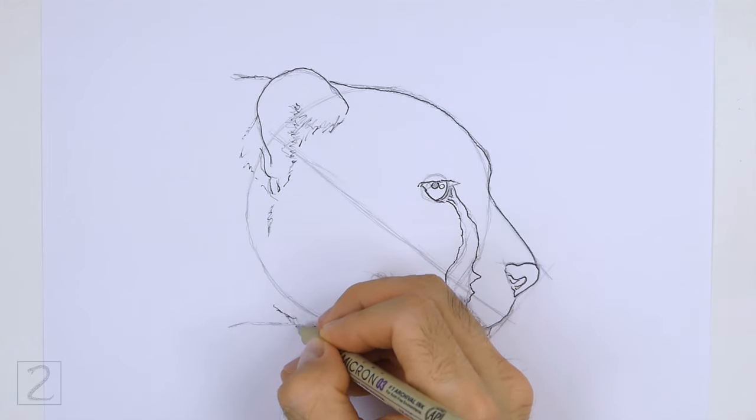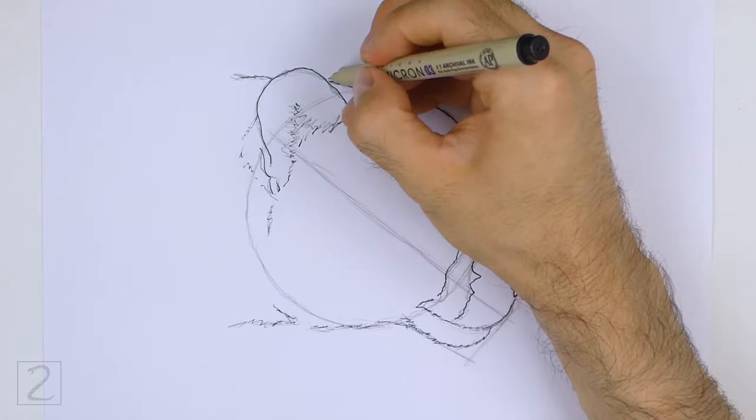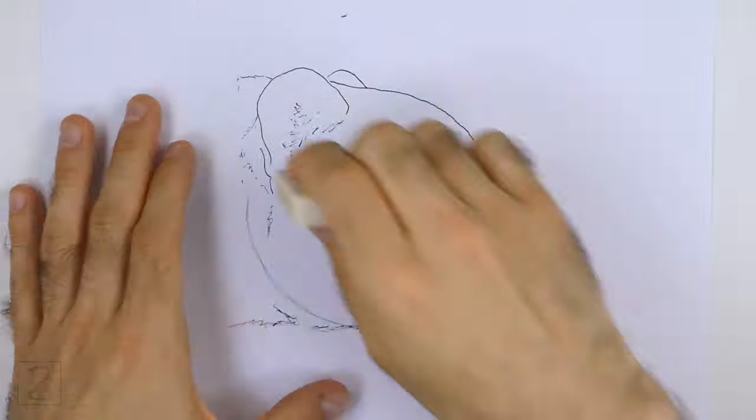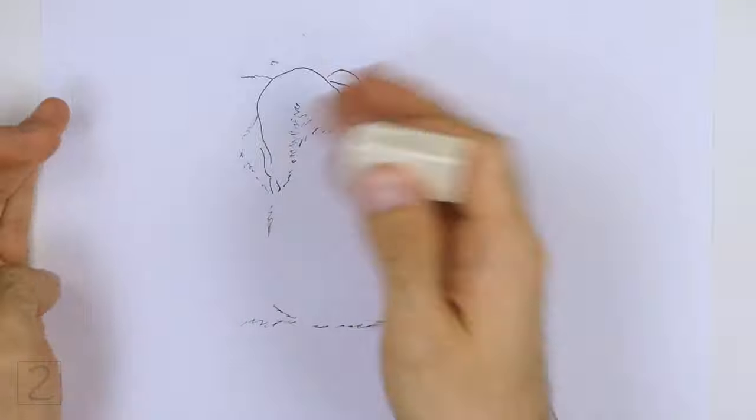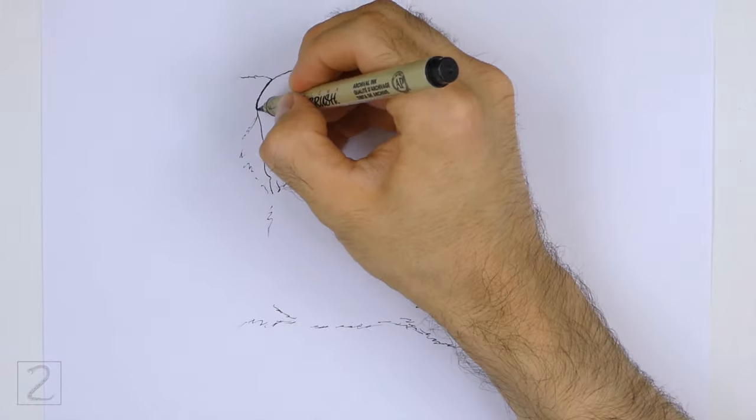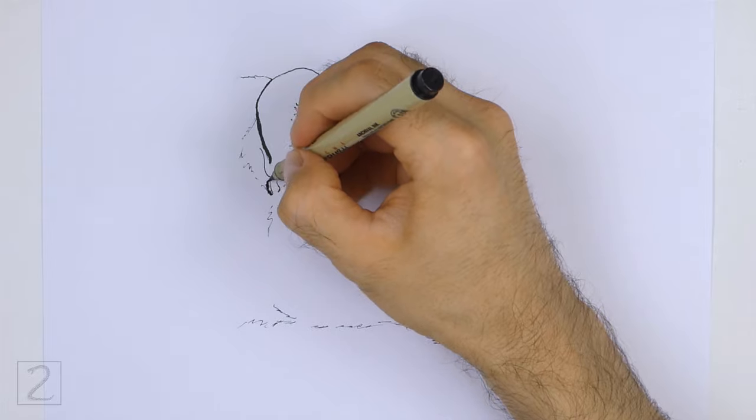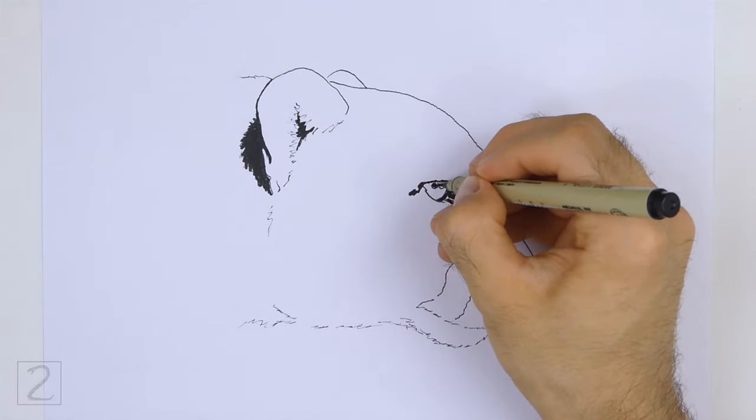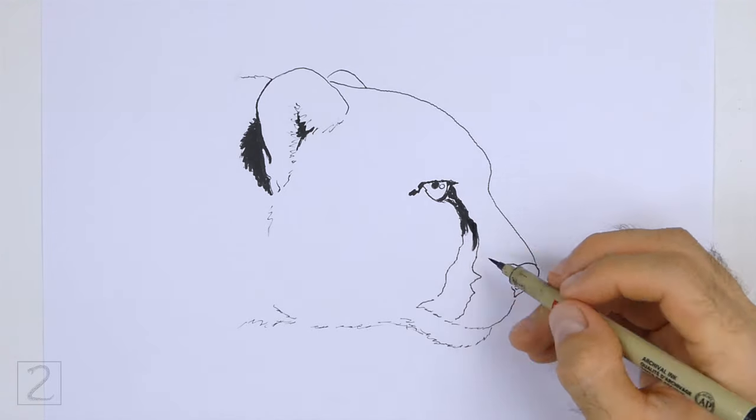Draw a short curved line on top of the head for the other ear. When the ink dries, erase all of the guidelines. Use ink to fill in the tear-like marking. Add black ink to the back of the ear too.